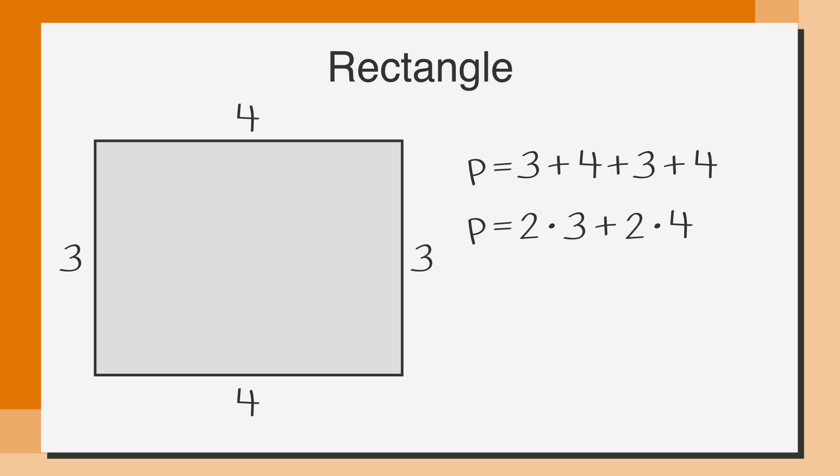Or p equals 2 times 3, plus 2 times 4, which gives us p equals 6 plus 8. The perimeter of this rectangle is 14.